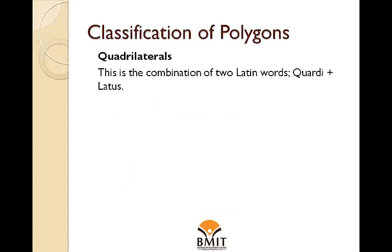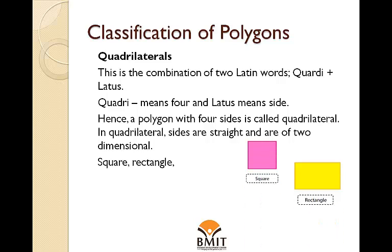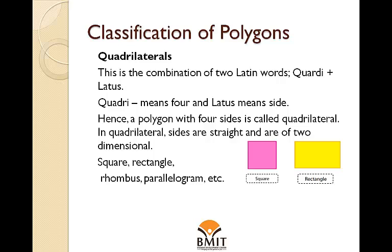Quadrilaterals: This is the combination of two Latin words — quadri plus lateralis. Quadri means four and lateralis means side. Hence, a polygon with four sides is called a quadrilateral. In a quadrilateral, sides are straight and two-dimensional. Square, rectangle, rhombus, parallelogram, etc. are examples of quadrilaterals.